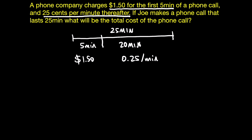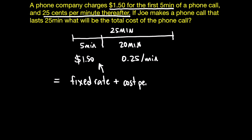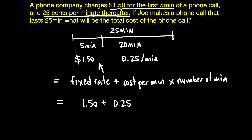To calculate this, you add that fixed rate — which is $1.50 for the first five minutes — plus the cost per minute multiplied by the minutes that you have spoken. So in this case it would be 25 cents multiplied by 20, because we are speaking for 20 minutes. If you add these two values you end up with $1.50 plus 25 cents multiplied by 20.